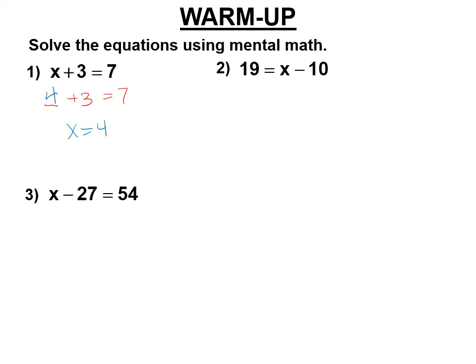Not a big difference. On the next one, it is 19 equals blank minus 10. Now, I get some people who think maybe it's 9, but 9 minus 10 is negative 1. So that's not right. What minus 10 is 19? It's 29. We're going to write x equals 29.